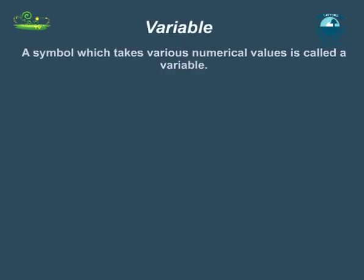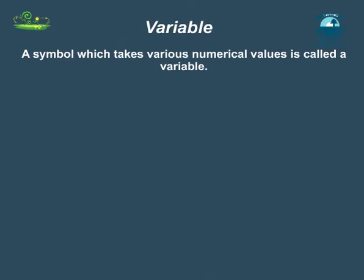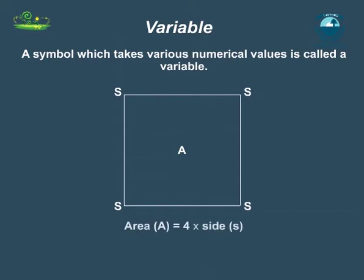Variable: A symbol which takes various numerical values is called a variable. For example, the area a of a square is given by 4 into side s. Here, 4 is constant while a and s are variables.